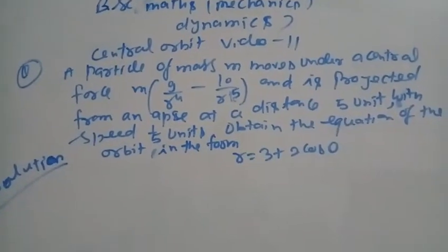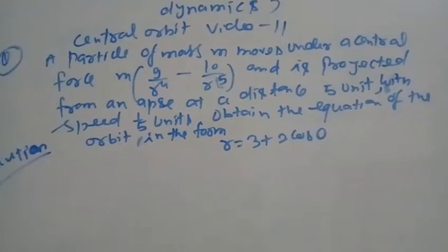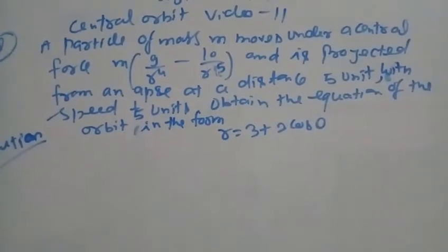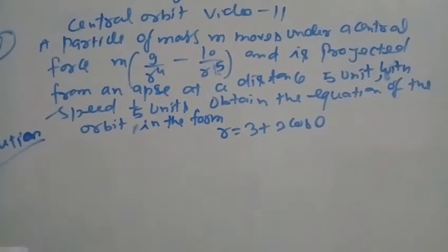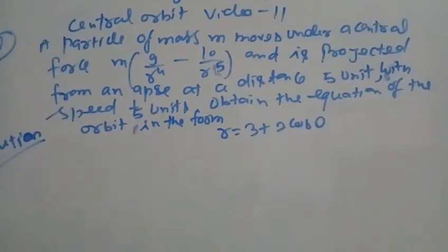BSV Mathematics. Question 11: A particle of mass M moves under a central force M times (9/r⁴ minus 10/r⁵). It is projected at a distance of 5 units. Obtain the equation of orbit in the form r equal to 3 plus 2 cos θ.